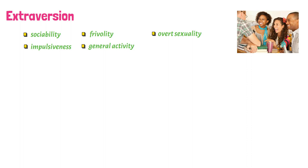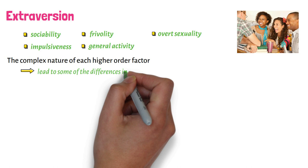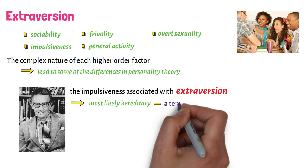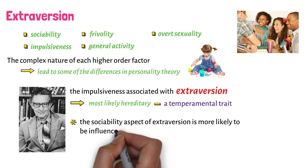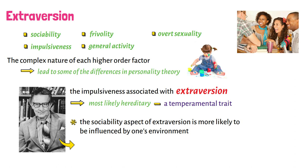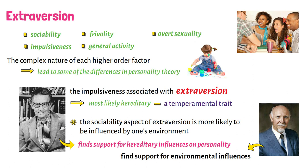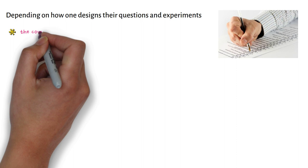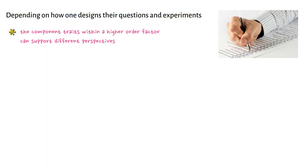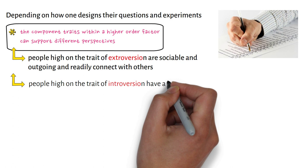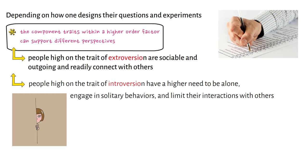An extrovert, according to Eysenck, is commonly described as an outgoing, expressive person, but the technical definition is more complex. Extroversion is a combination of sociability, impulsiveness, frivolity, general activity, and overt sexuality. The impulsiveness associated with extroversion is most likely hereditary, whereas the sociability aspect is more likely to be influenced by one's environment. People high on extroversion are sociable and outgoing, whereas people high on introversion have a higher need to be alone and limit their interactions with others.